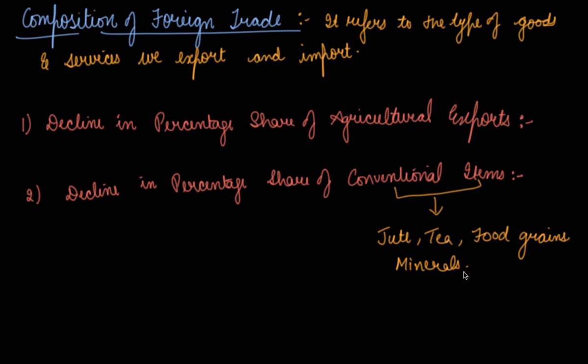While with the planned development program in place, domestic demand of these conventional items increased. Just because we started our industrialization. We have introduced our own domestic industries. So their demand, conventional items demand has increased in our domestic market in India. So what we did, we reduced the export of these conventional items in the rest of the world.